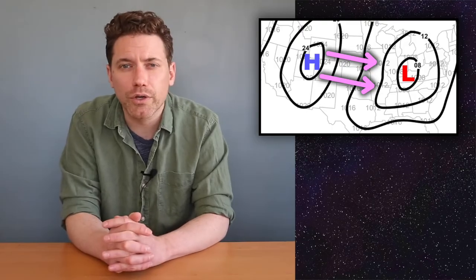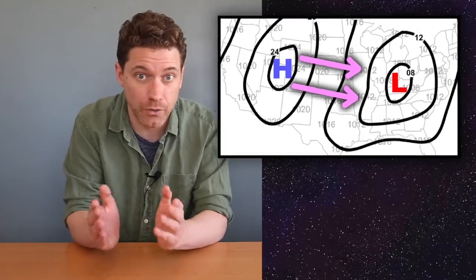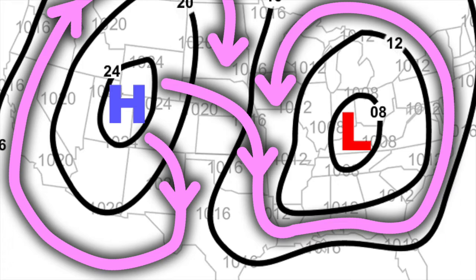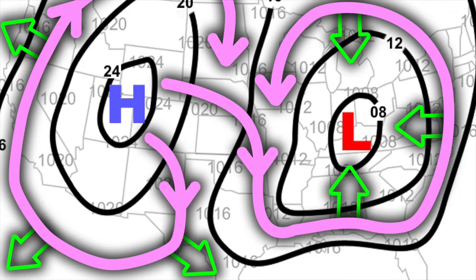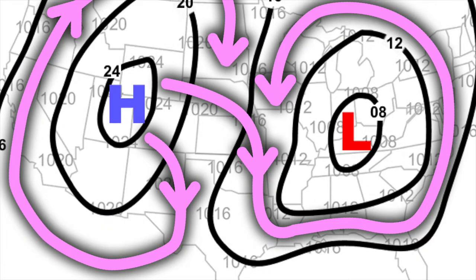However, since the Coriolis effect acts upon this wind and the U.S. is in the northern hemisphere, the wind turns to the right. As this wind moves in its new direction along the isobars, the force from the pressure gradient pulls it to the left while the Coriolis force pulls it to the right, and the resulting flow is in geostrophic balance.